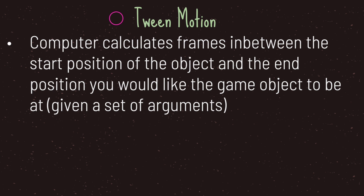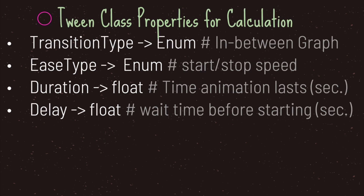To recap, the tween class is based on or inspired by tween motion — the computer calculates in-between frames from the start position to the end position of the object. You're also able to specify a set of parameters or arguments to determine the computer's calculation. The tween class provides values for your methods to customize that tween motion calculation.